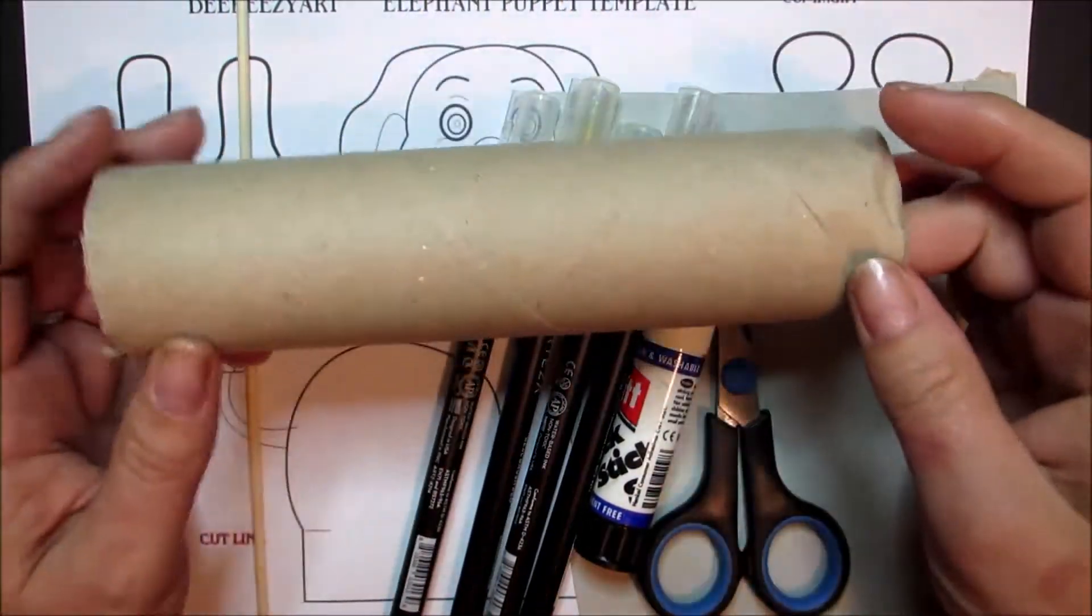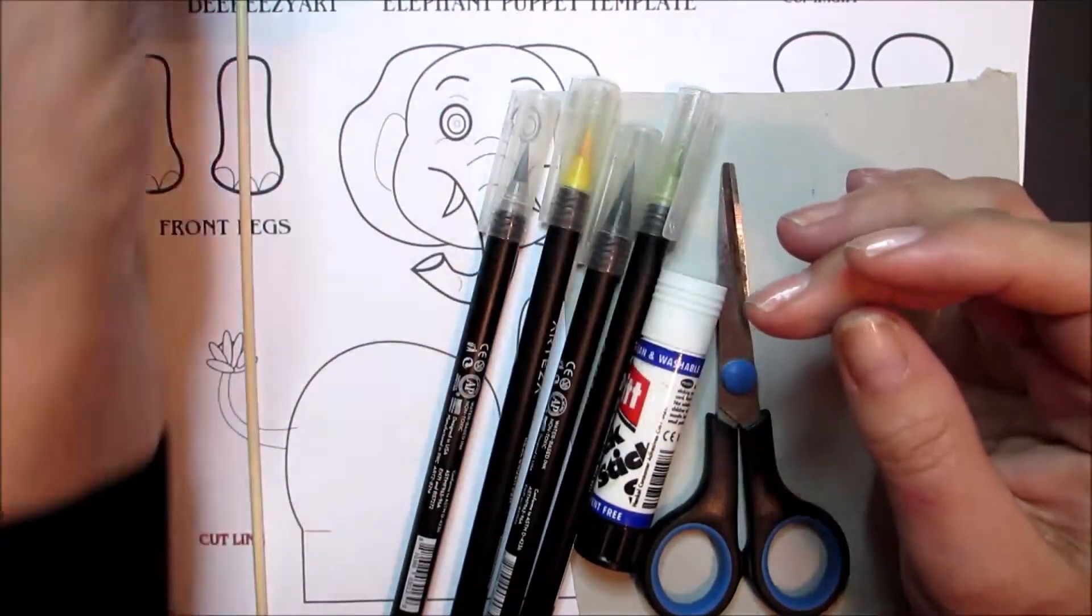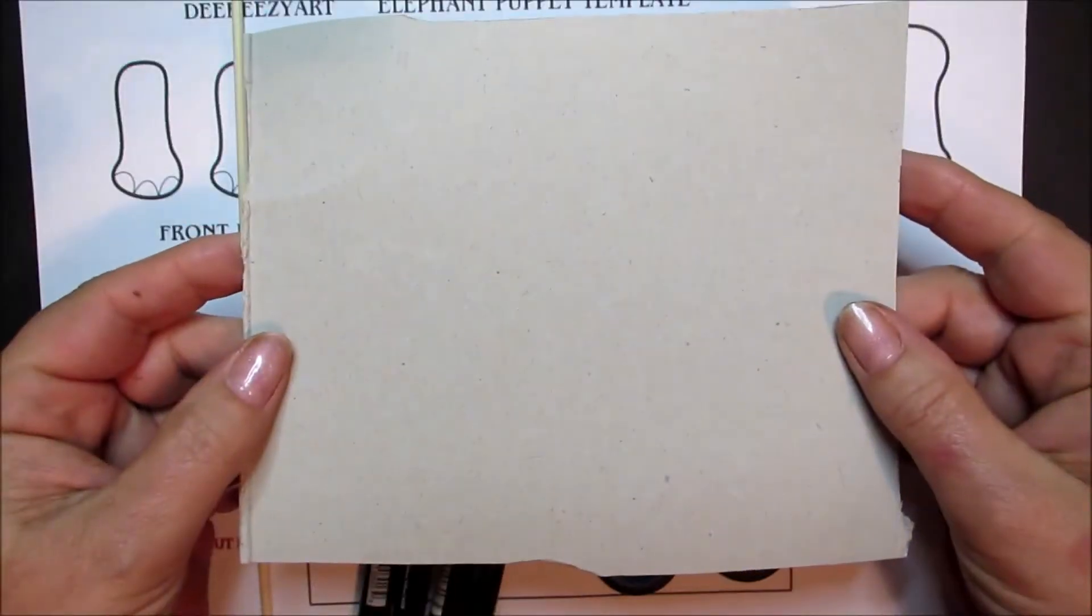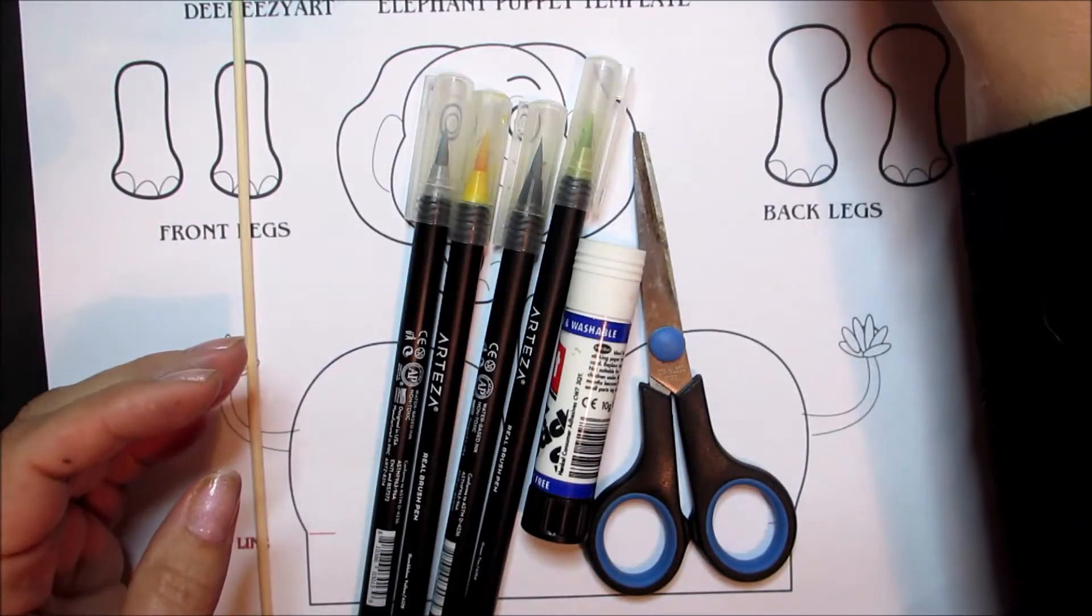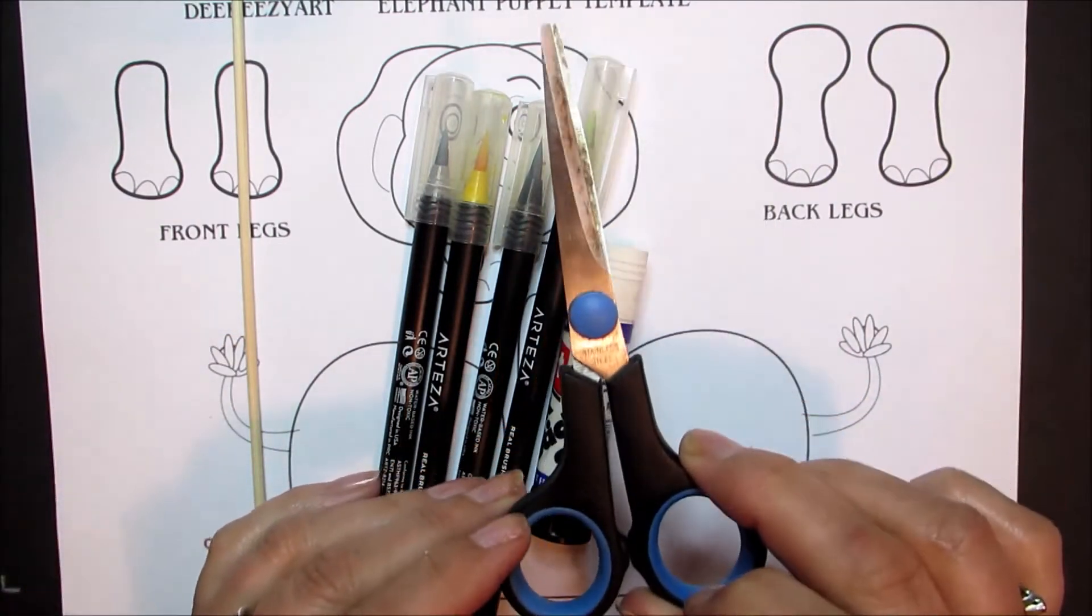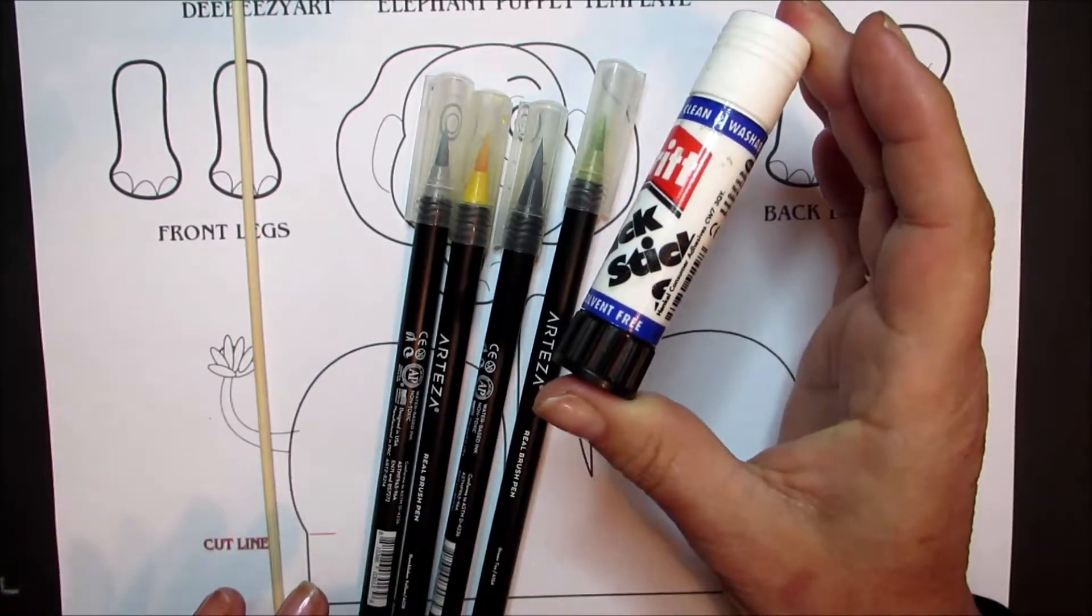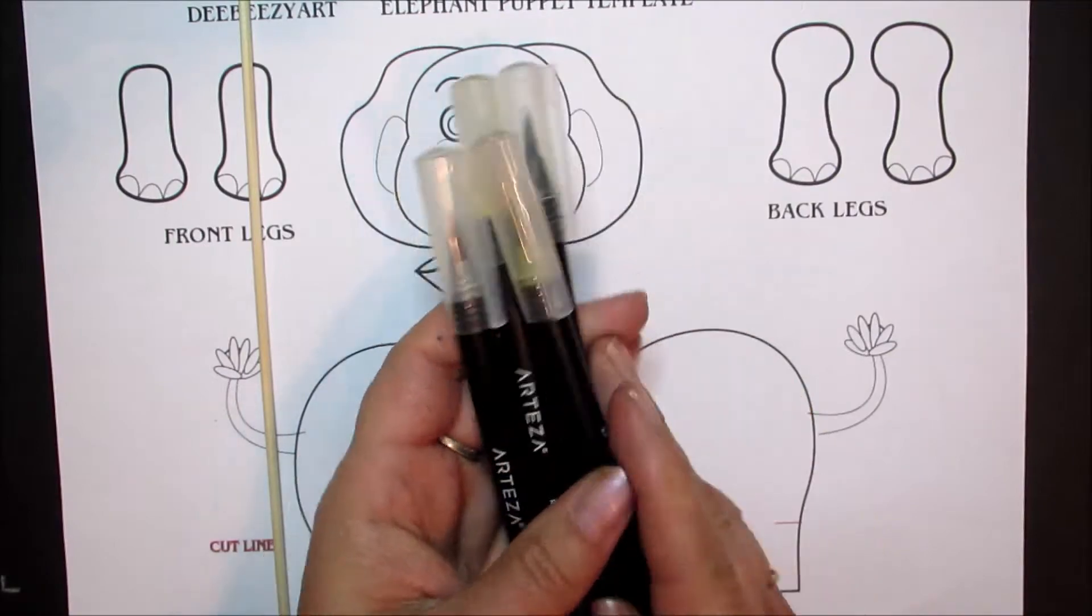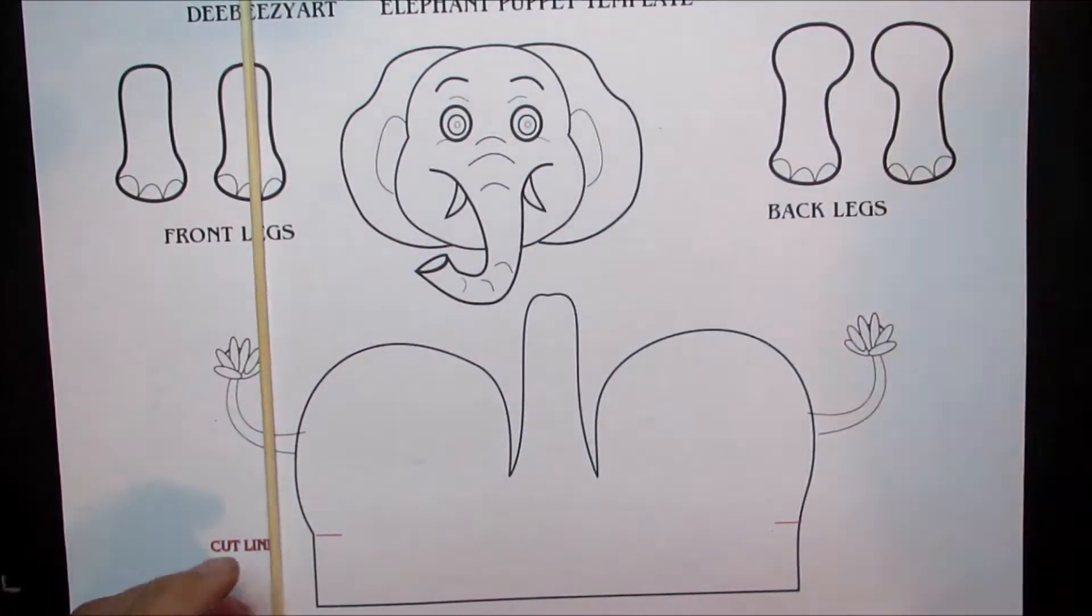So for today's project we're going to use the inside of a toilet roll. We're going to need a small piece of card which can be part of a cereal box or a pizza box, a pair of safety scissors, some Pritt stick type glue, and then a collection of paints, pens, or pencils to color in with.